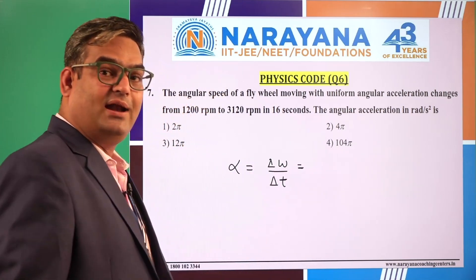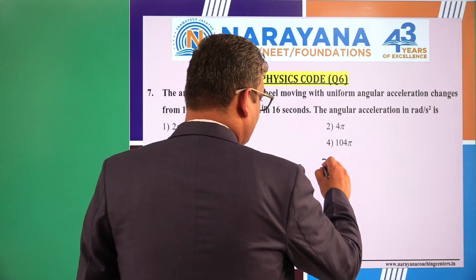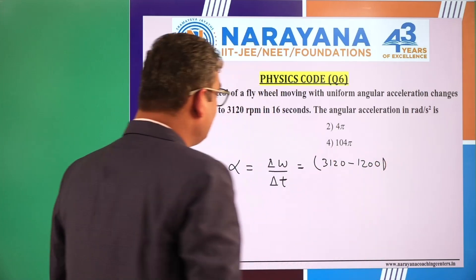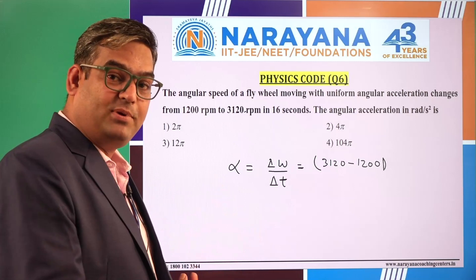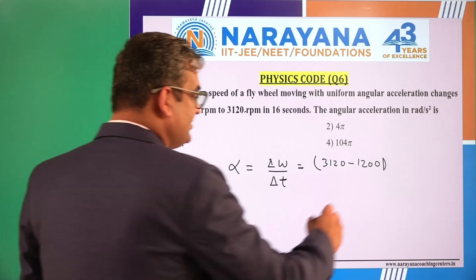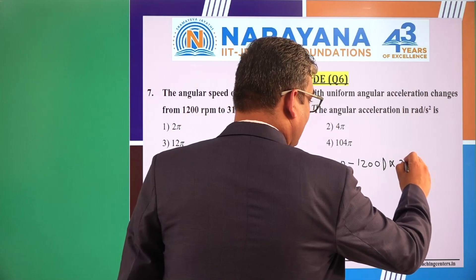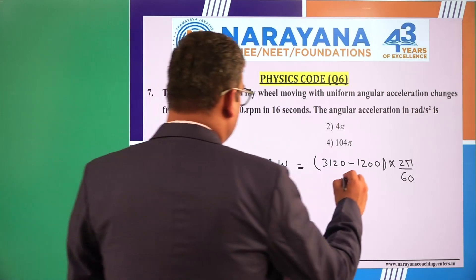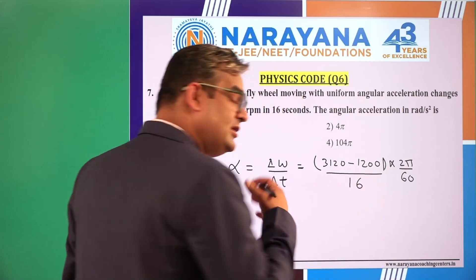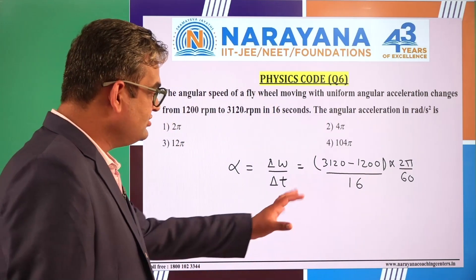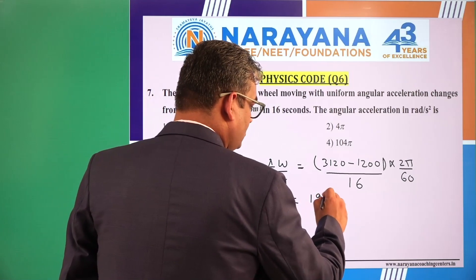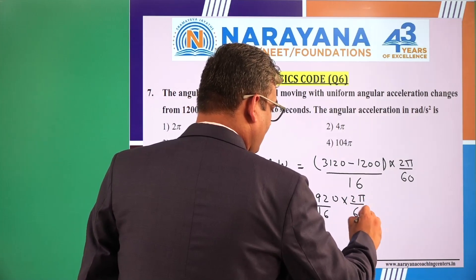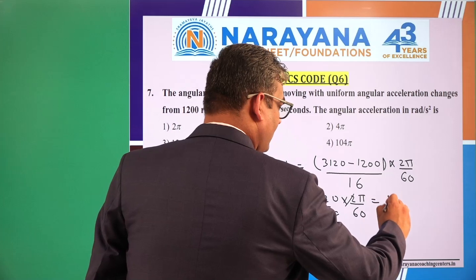Delta omega will be 3120 minus 1200, which equals 1920. But this value is in rotations per minute, so to convert rpm to radians per second we multiply by 2π/60. So the calculation becomes 1920 divided by 16, multiplied by 2π over 60, giving us 4π radians per second squared.